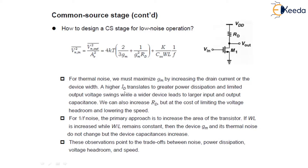However, a higher drain current translates to greater power dissipation and also limits the output voltage swing. If we consider a wider device because we want W/L to be large, it leads to larger input and output capacitance. We can also increase RD, but at the cost of limiting the voltage headroom and it will also limit the speed.